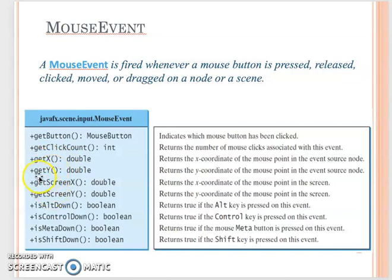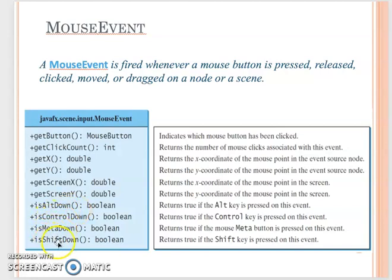You can get the source event source node, and you can get coordinates relative to the window in your GUI, or relative to the whole screen if needed. Also, your mouse action can be associated with different keys, and you can check those as well. That's the mouse event — sometimes we need that information to know how we will implement our event handler.